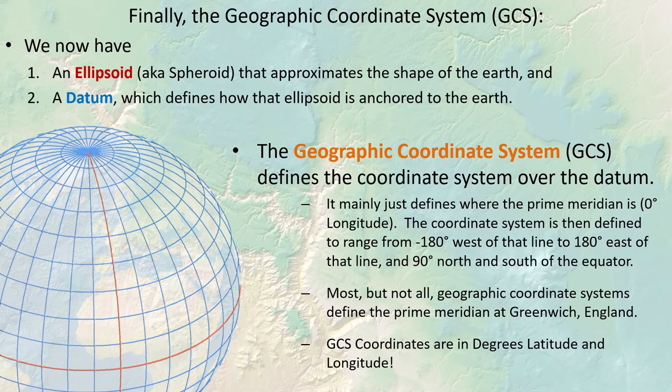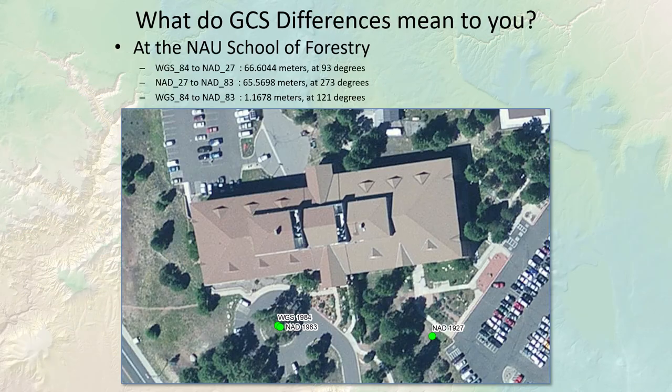Not all geographic coordinate systems use the same prime meridian. There are geographic coordinate systems where zero degrees longitude is in Jakarta, Cairo, or Paris. However, pretty much any geographic coordinate system we encounter in typical work in the United States will define the prime meridian at Greenwich, England.